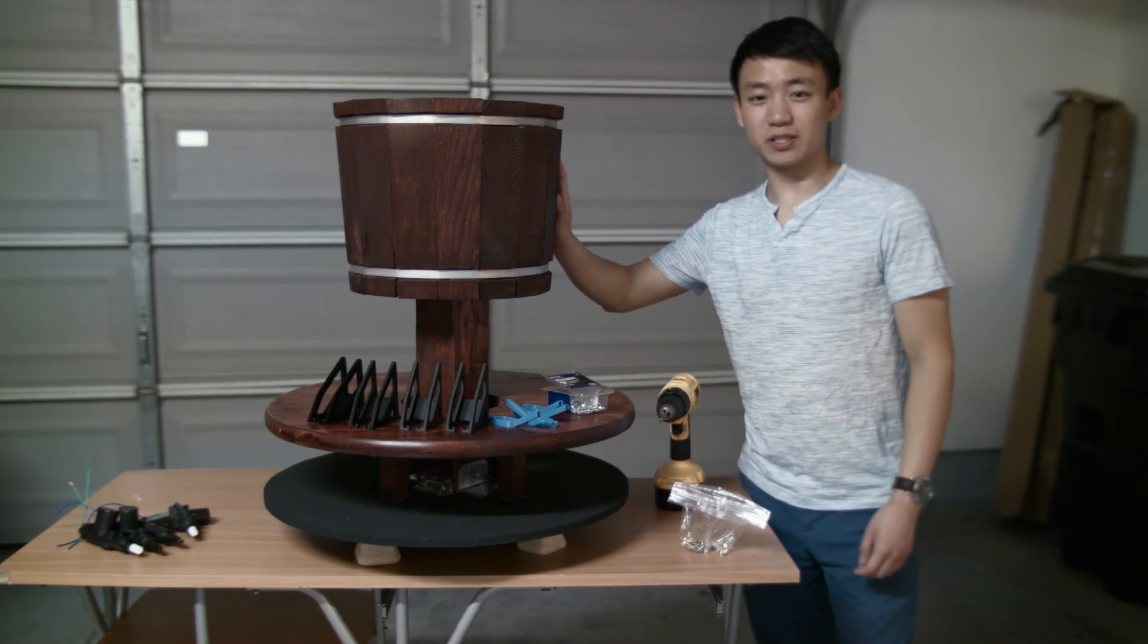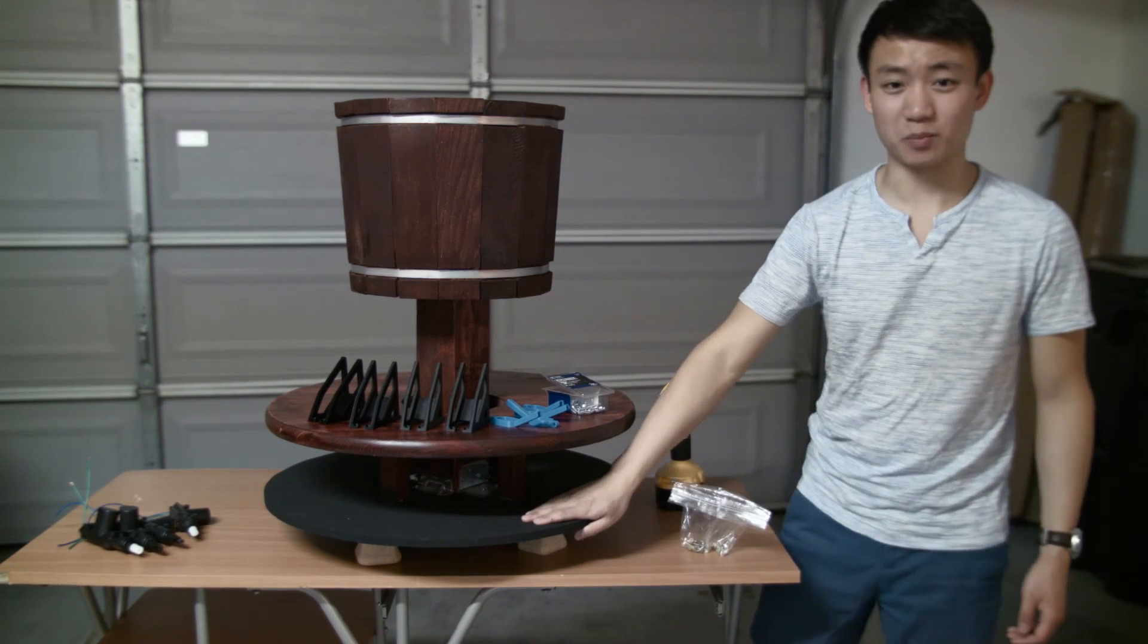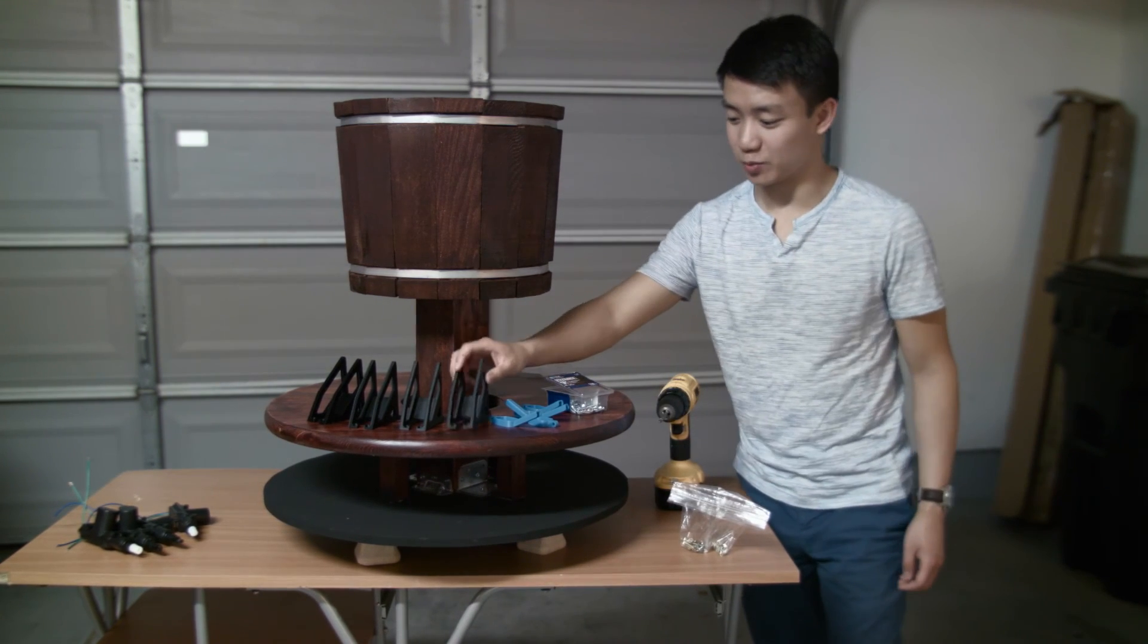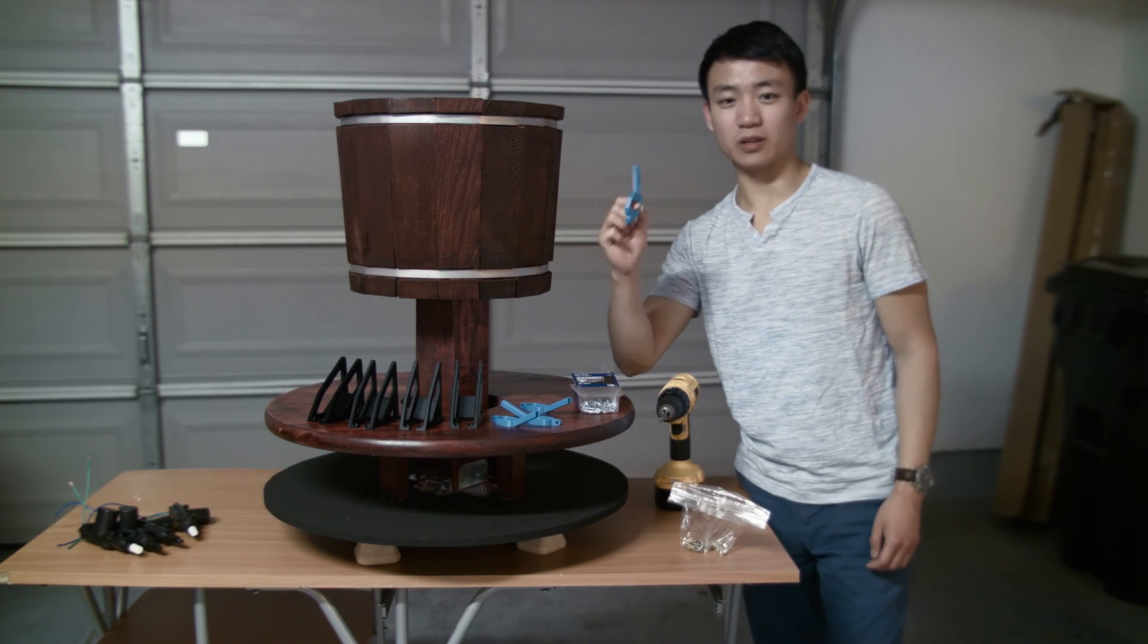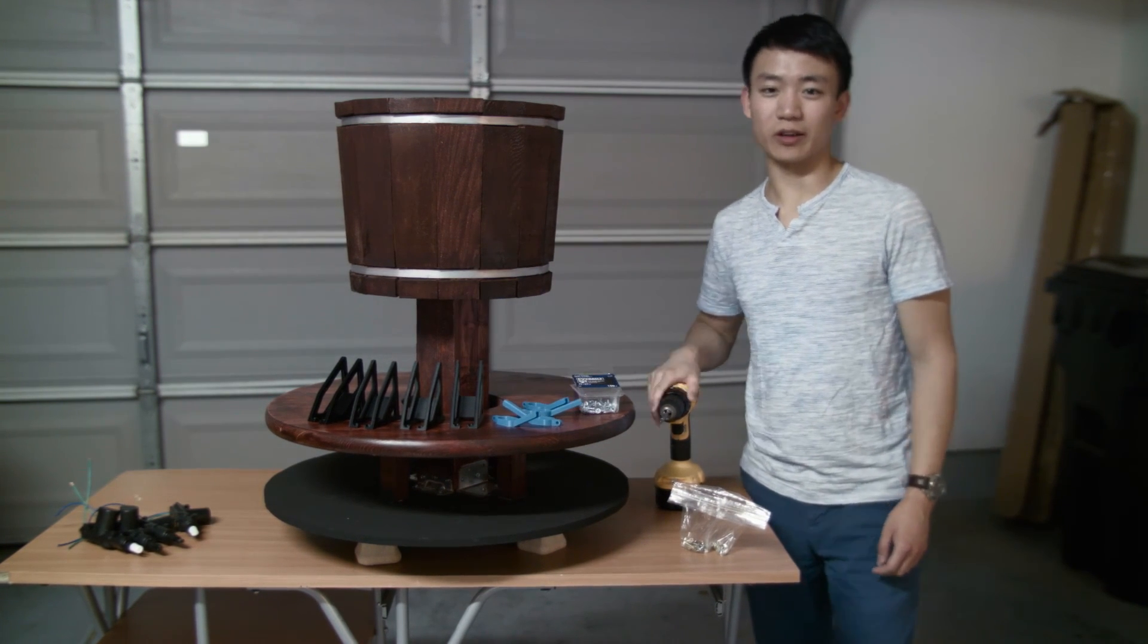Aaron just got done finishing this thing. He also painted the bottom black. Now we also have some 3D printed parts printed. These are the brackets for the actuators, and we also got some arms for the nozzles. We're going to start putting these things in the middle.